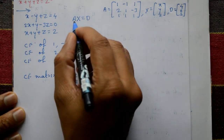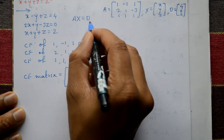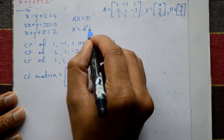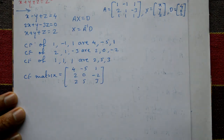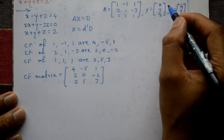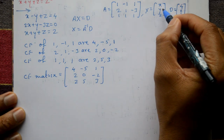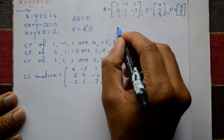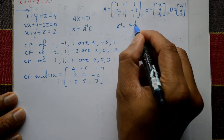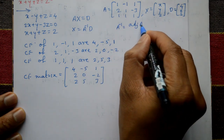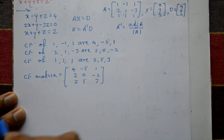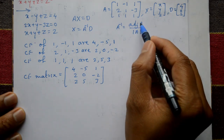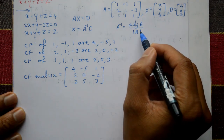To solve using the matrix method, Ax equals D, so x equals A inverse times D. We require the x, y, and z values. To find the inverse of A, inverse of A equals the adjoint of A divided by the determinant of A.